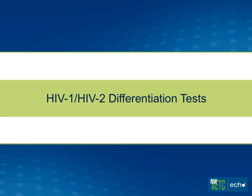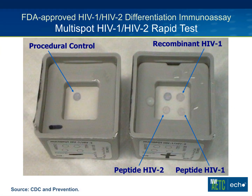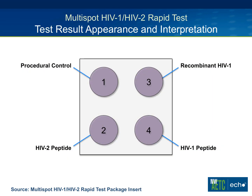Because these fourth-generation tests are not able to accurately differentiate HIV-1 and HIV-2, this algorithm requires a second test to differentiate — the so-called multi-spot test. Basically, you apply the specimen to a test with four wells: a procedure control in the upper left, two different wells for HIV-1 — one recombinant and one peptide well — and then a well for HIV-2.